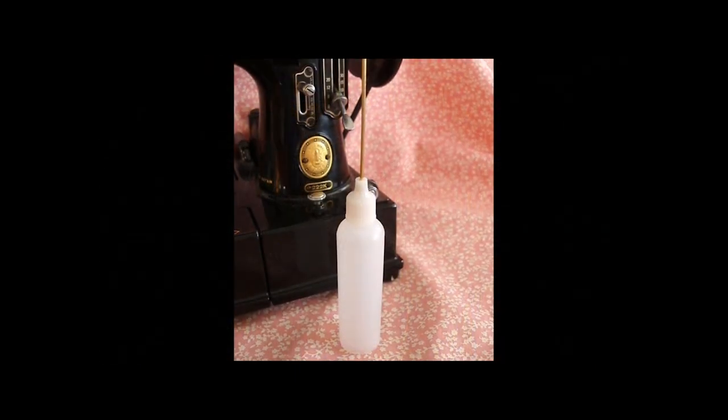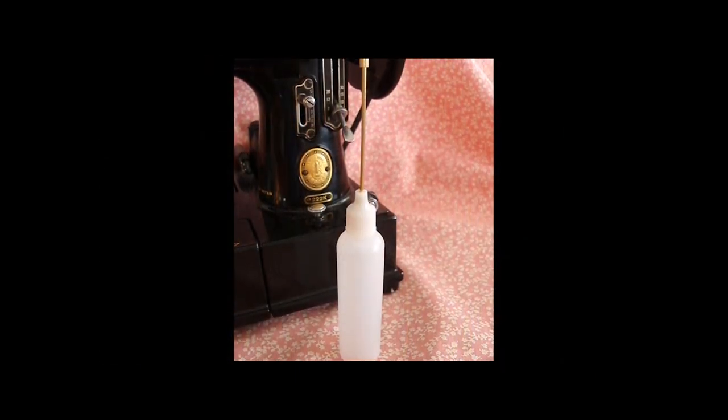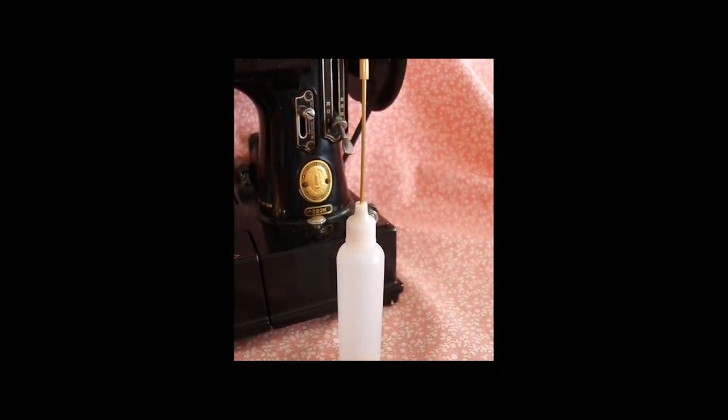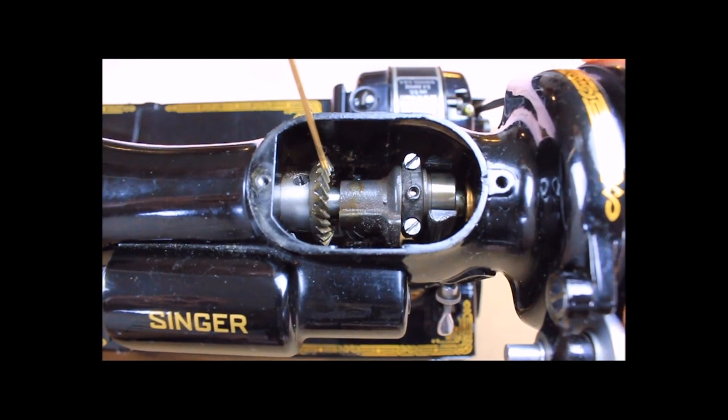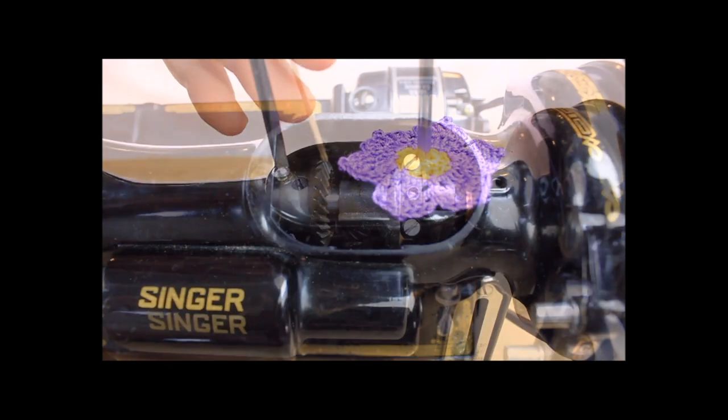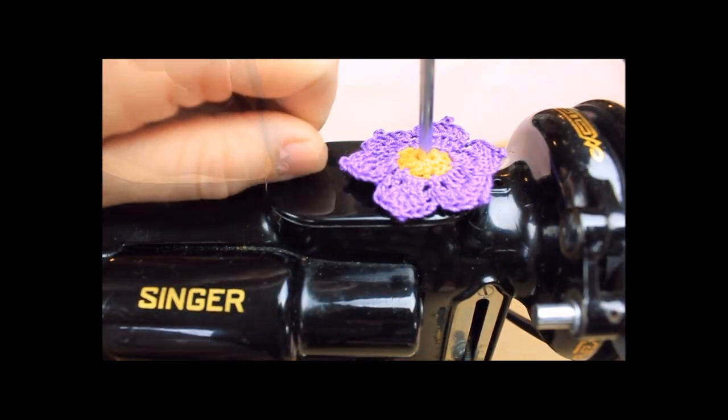We put kerosene in the same style bottles as our sewing machine oil, so that you can direct the kerosene precisely on the point that is to be cleaned. You may order these long-spouted empty bottles on our website as well.